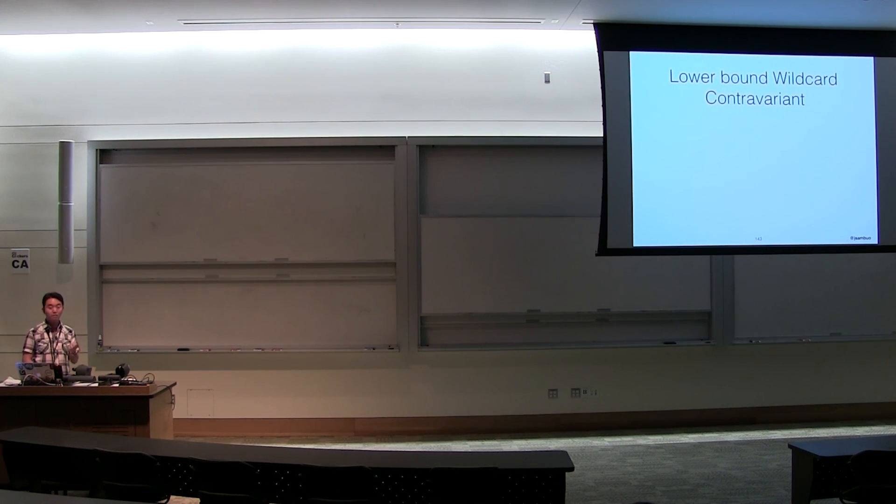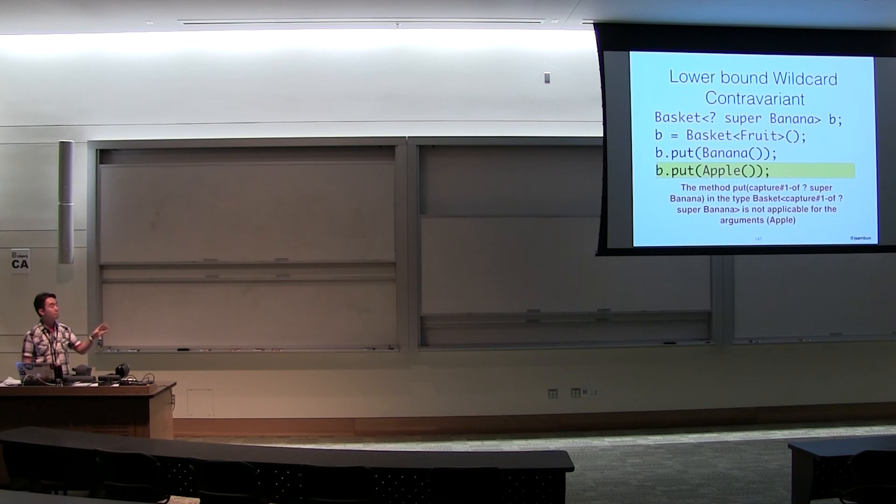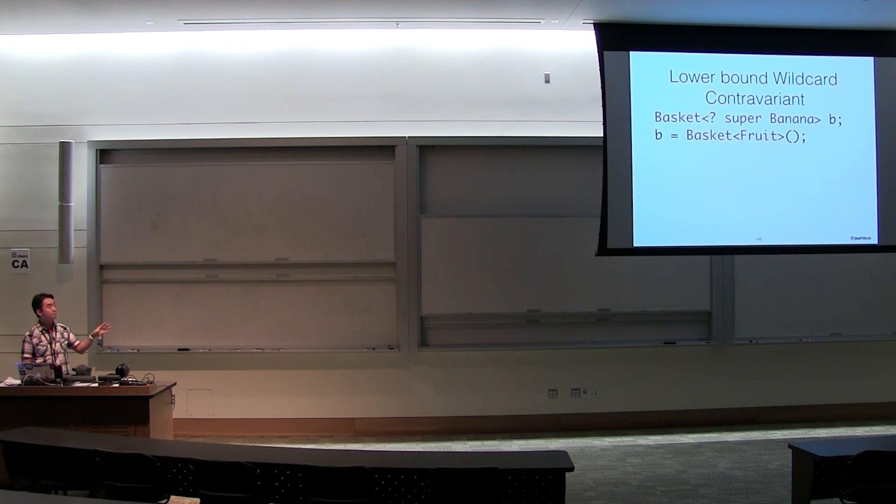If we want to have a contravariant or write-only basket, we can use the wildcard and specify that it has a lower bound. To do this, we say that the wildcard must be a super class of the type that you want to add, such as bananas. We can use a basket of fruit for this basket of wildcard super banana. We can add as many bananas as we want to it. If we try to add another fruit, the compiler will complain. Now let's try to get something from it. For some reason, we can pull objects from it, but we can't actually pull any other specific types, such as bananas. The compiler will complain as we expect.